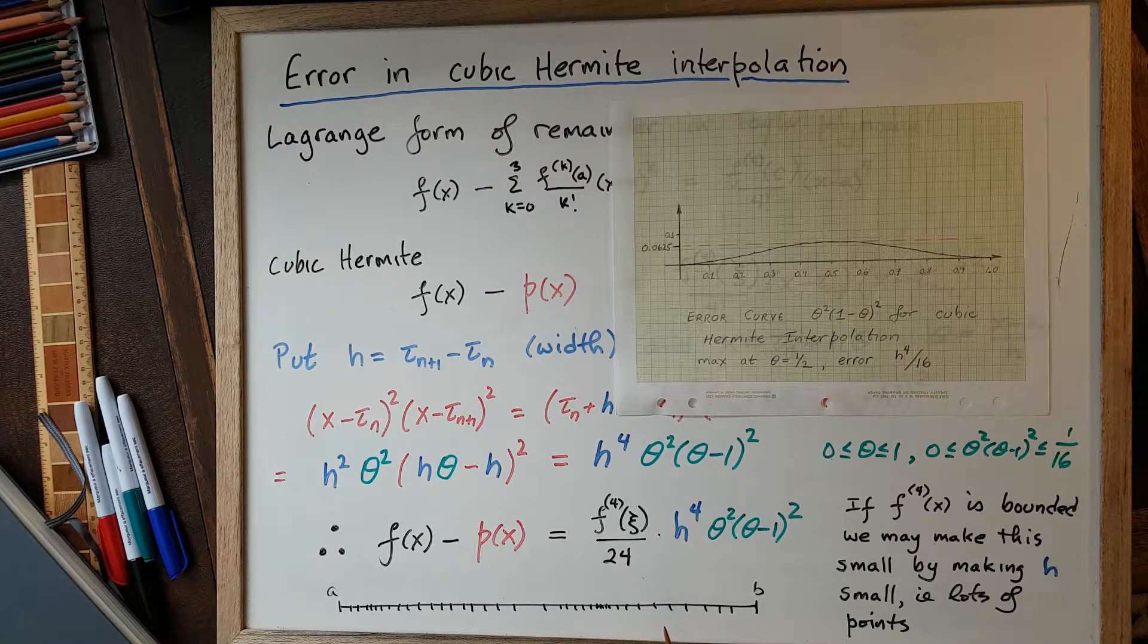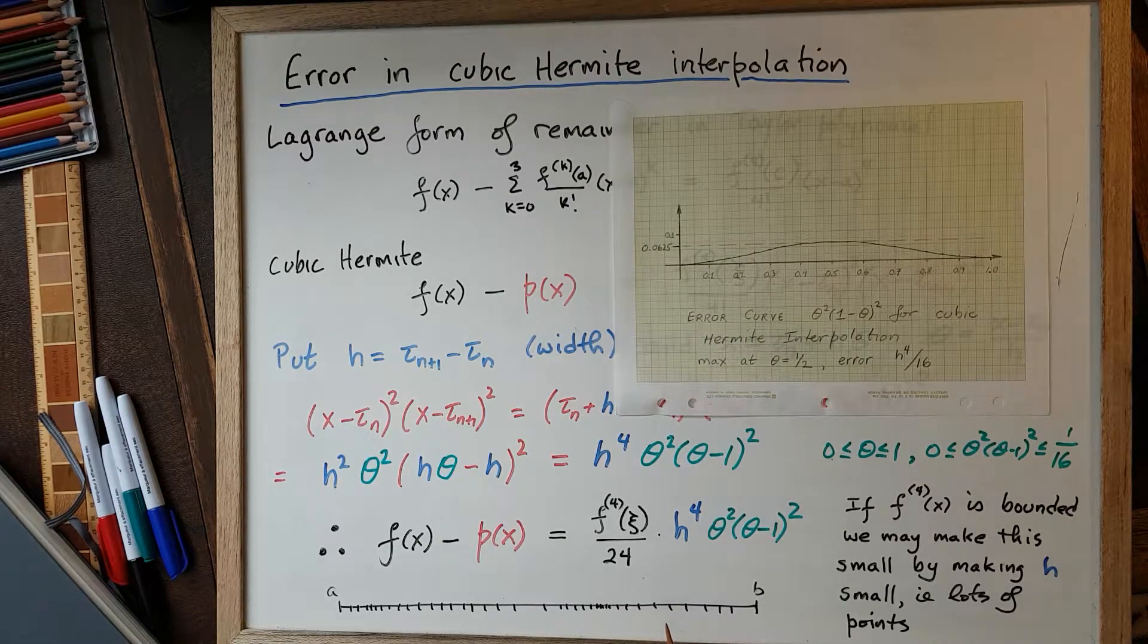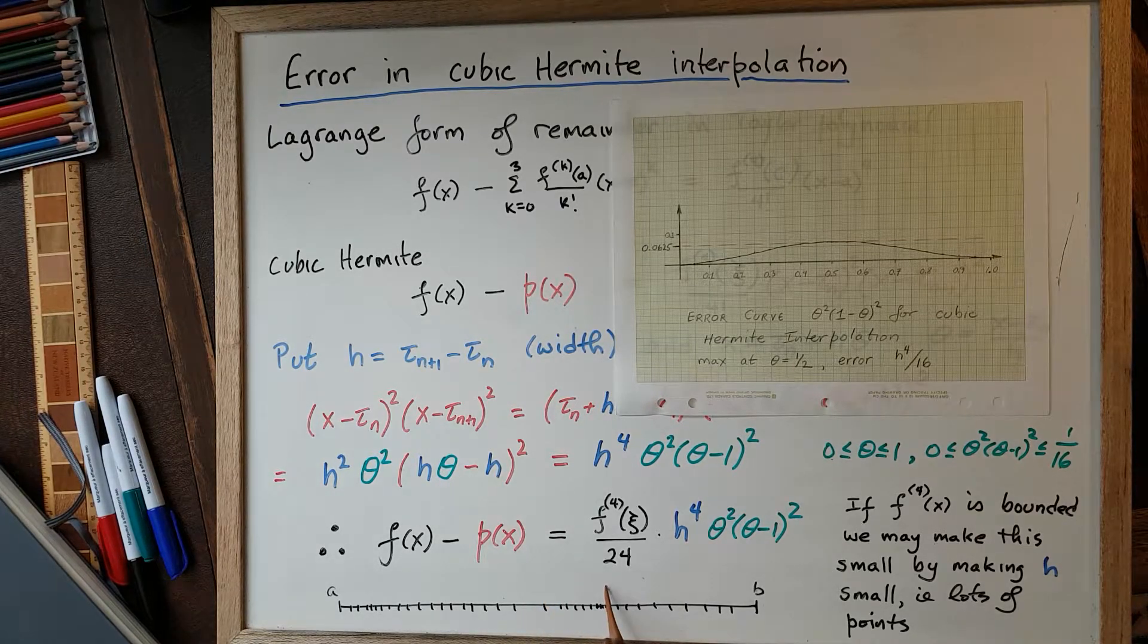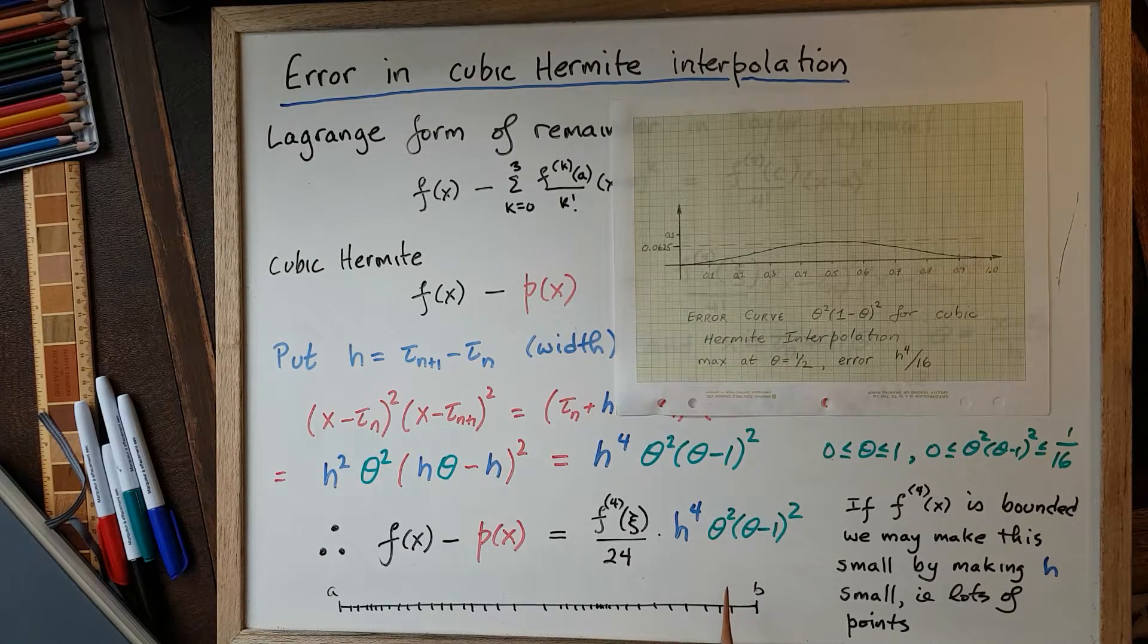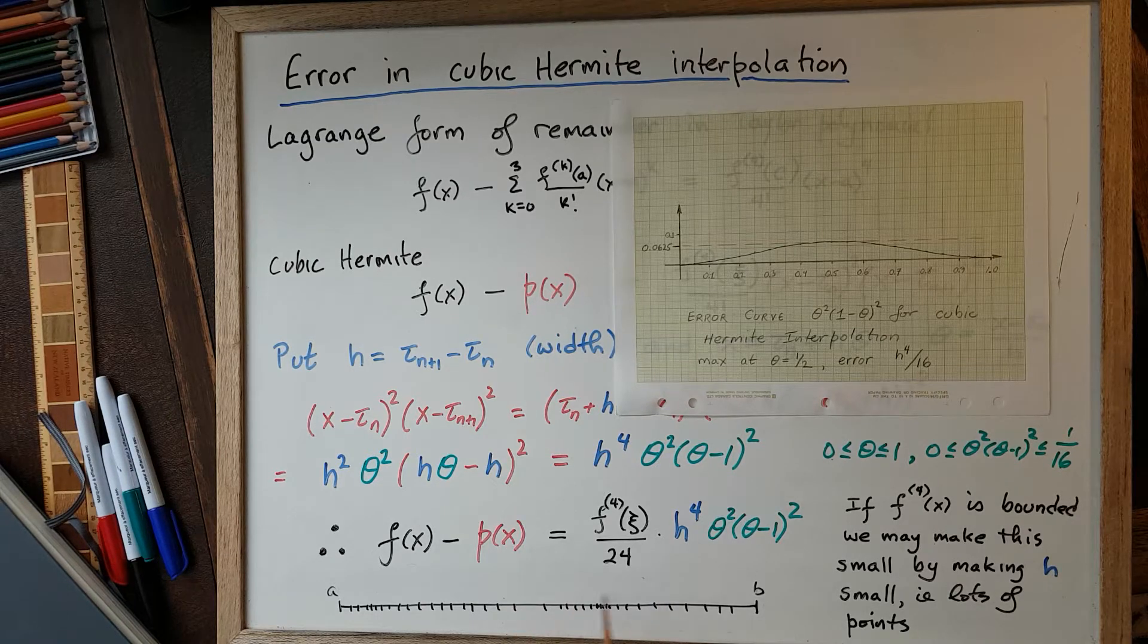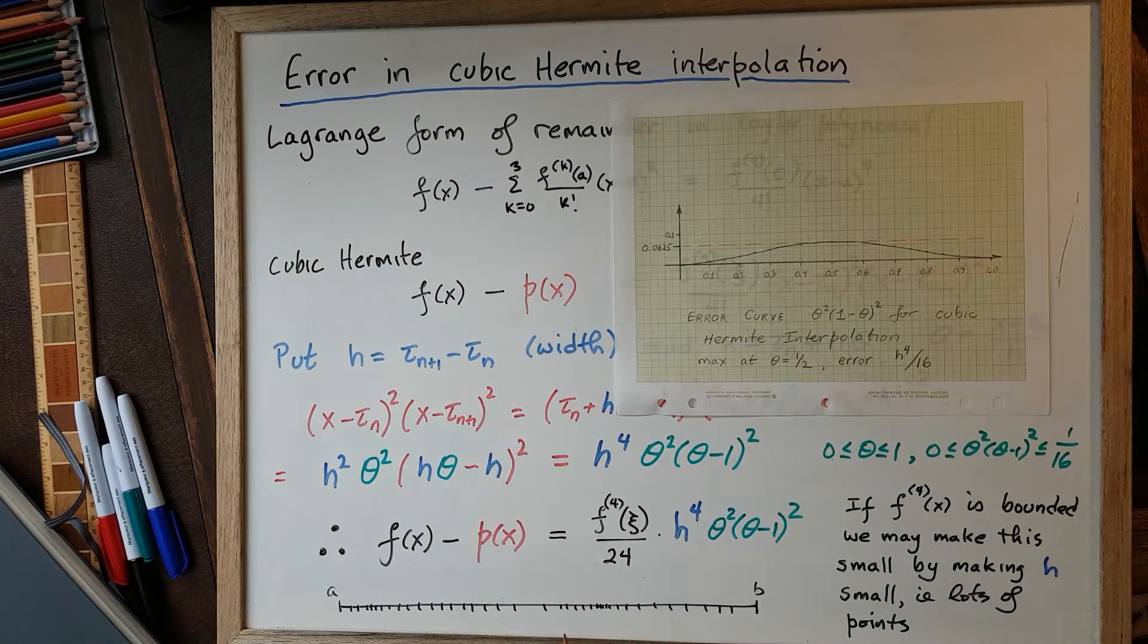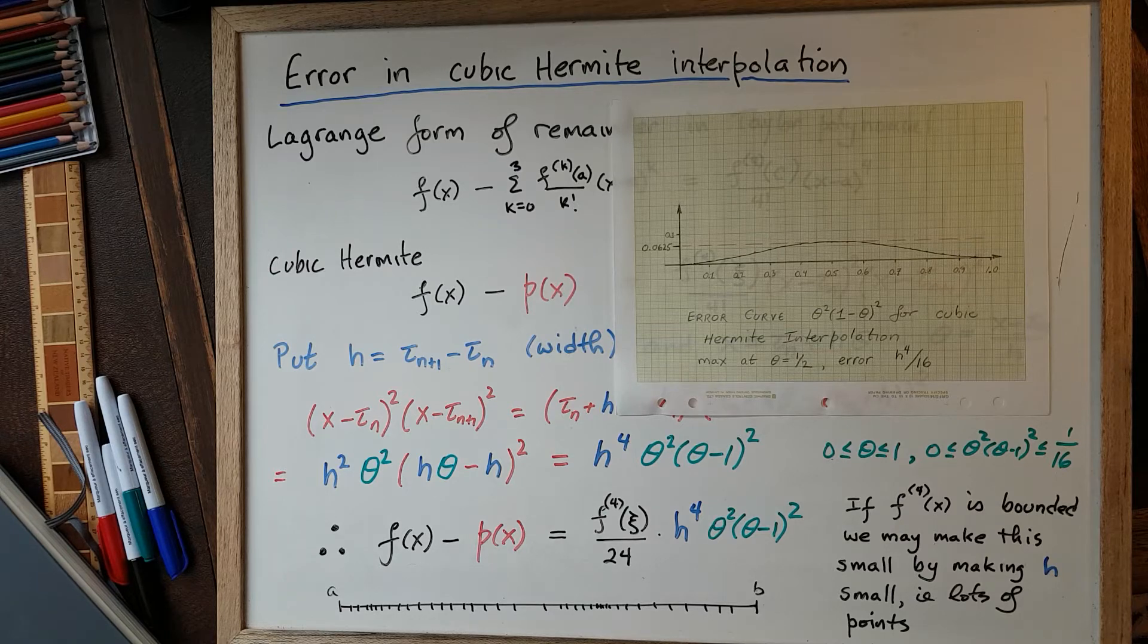An interesting take on this formula is you could actually use just the values of sine at 0, sine at π/6, and sine at π/3, and just those. So there'd be two cubic Hermite interpolants over those two intervals, and you would get four places of accuracy for the sine function, and you can verify that for yourself by using this formula.